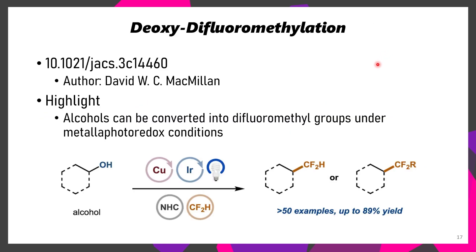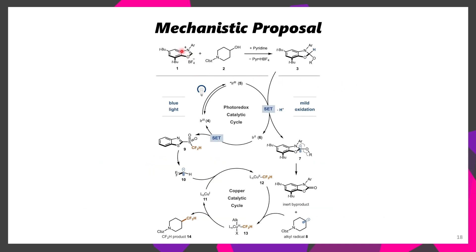The next paper discusses the deoxydifluoromethylation of alcohols. This chemistry is quite similar to what we just discussed from the MacMillan group, but instead of using a trifluoromethylating agent, they use a difluoromethylating agent, and they also prepare a few derivatives where they have an R group instead of just an H. Similarly, the NHC reagent forms the activated alcohol and generates a carbon-centered radical, but instead of a CF3 sulfonium species, they have the CF2H sulfone. This generates a CF2H radical, which adds to the copper(I) species, forming a copper(II) CF2H complex, which undergoes oxidative addition from the alkyl radical to form a copper(III) species, followed by reductive elimination, affording the product.